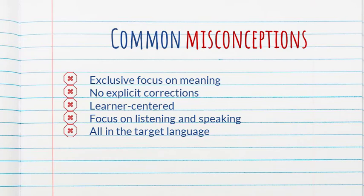A lot of misconceptions about communicative language teaching are rooted in the fact that these two hypotheses view form-focused instruction so differently. The misconceptions that Spada outlines include: that CLT only focuses on meaning with no focus on form, that there are no explicit corrections when a student produces an error, that it is all learner-centered as opposed to teacher-centered, that we focus on listening and speaking much more than reading and writing, and that only the target language is used in class. Spada says these are myths — things people think CLT is about, but she argues they are not true.